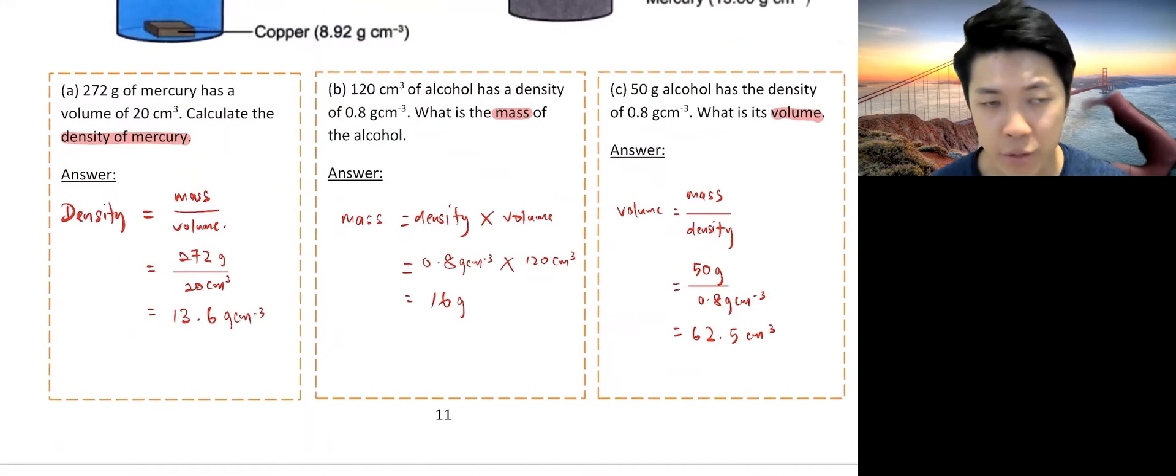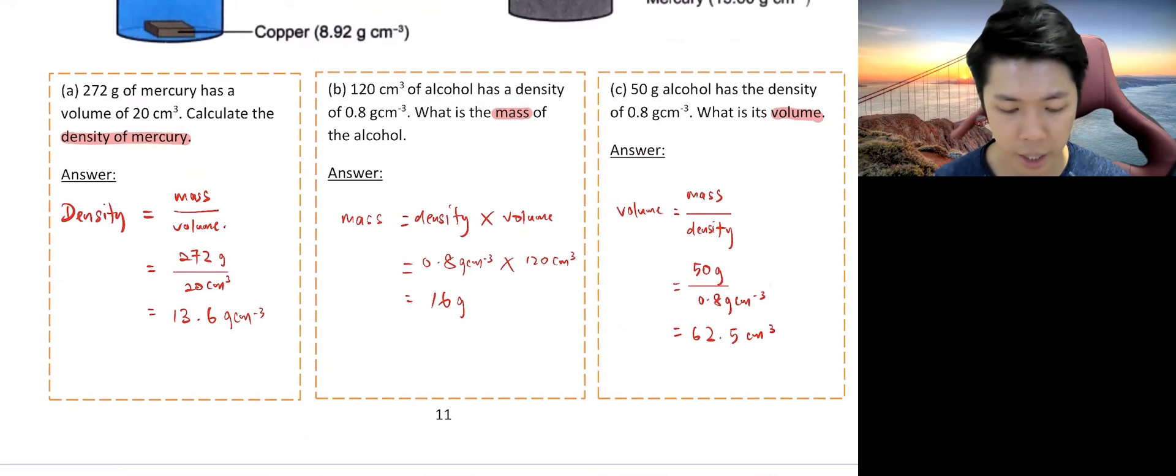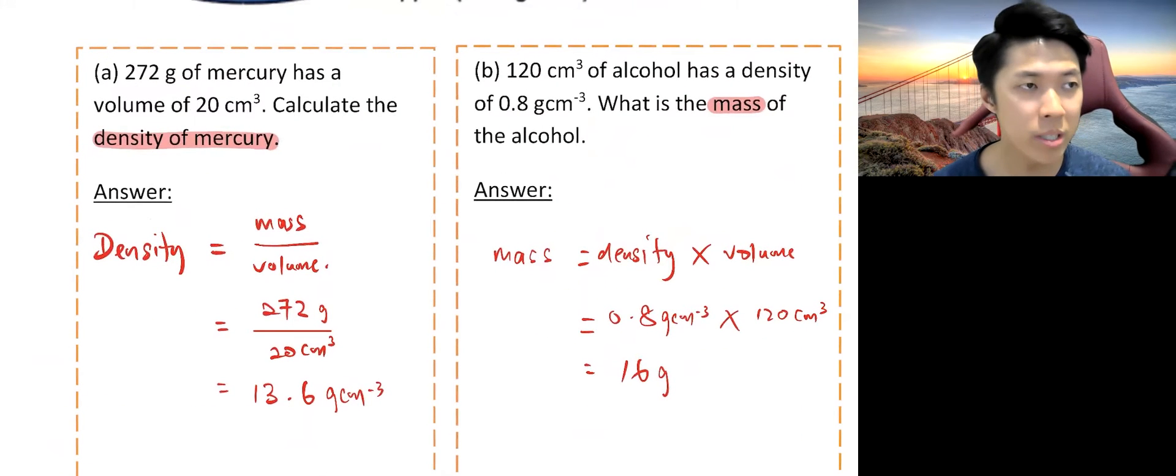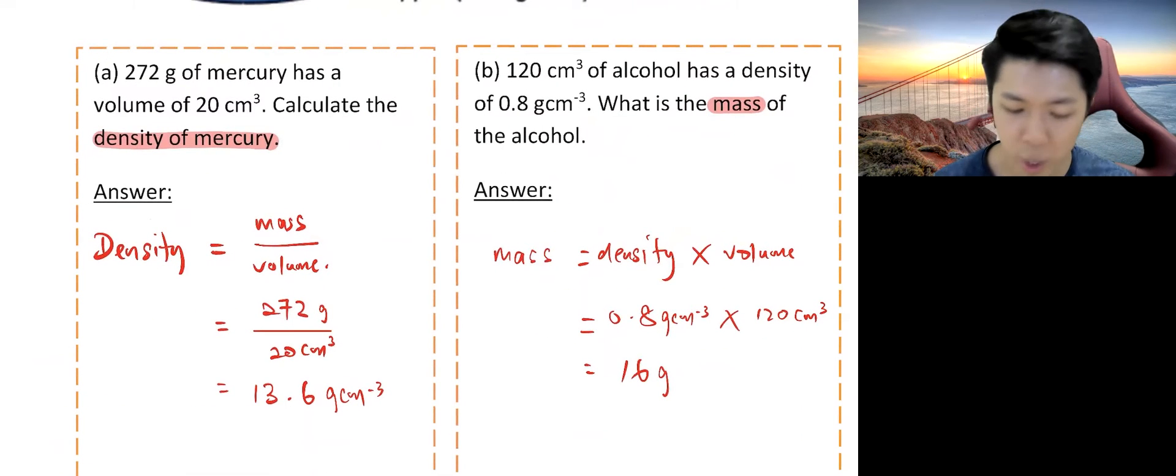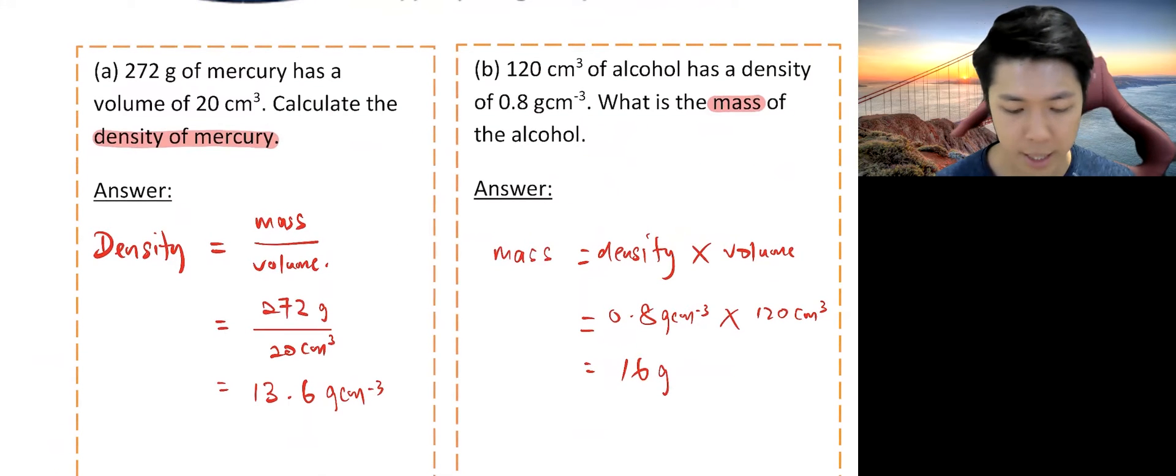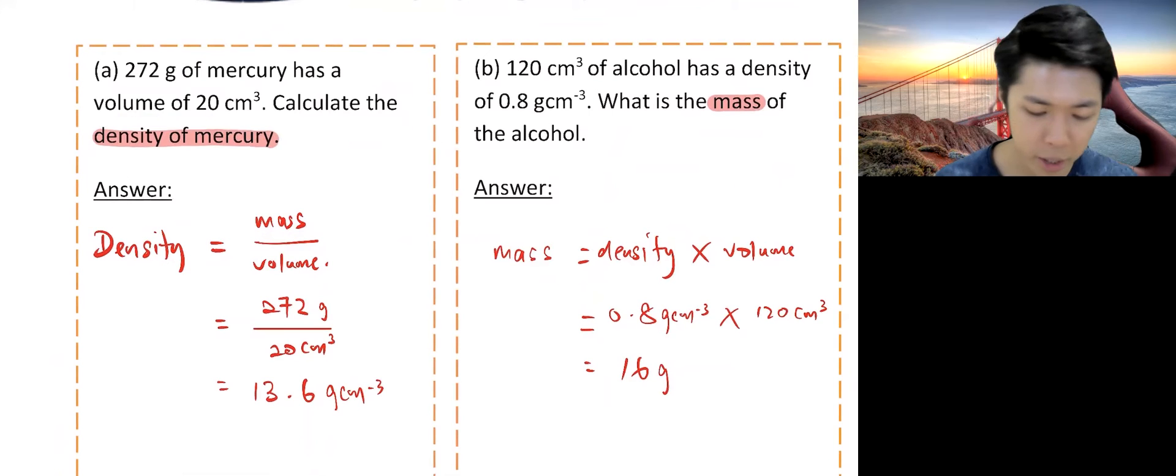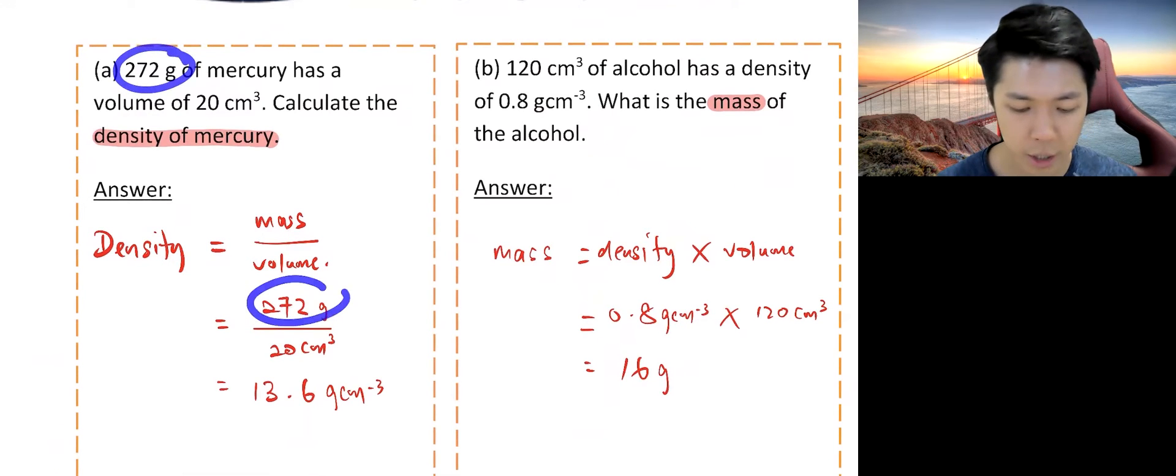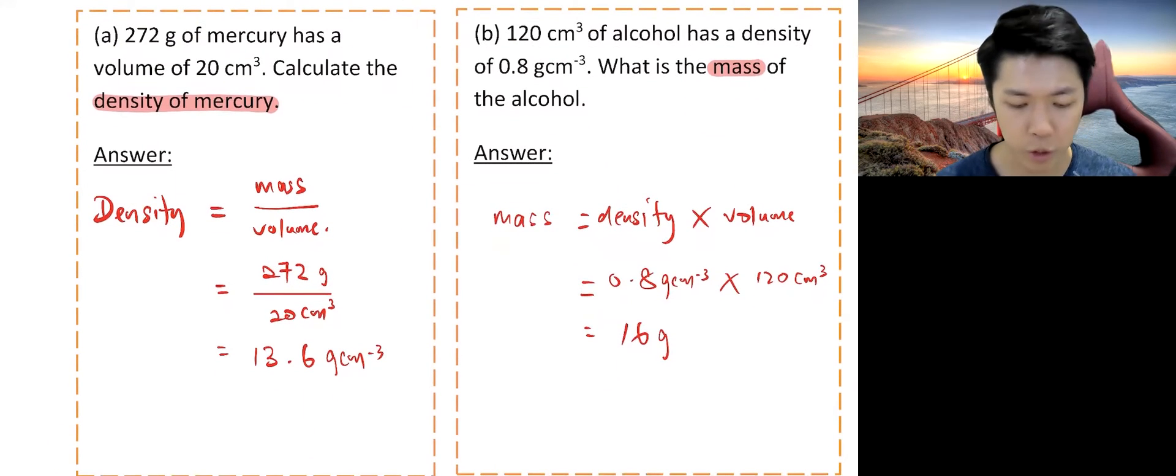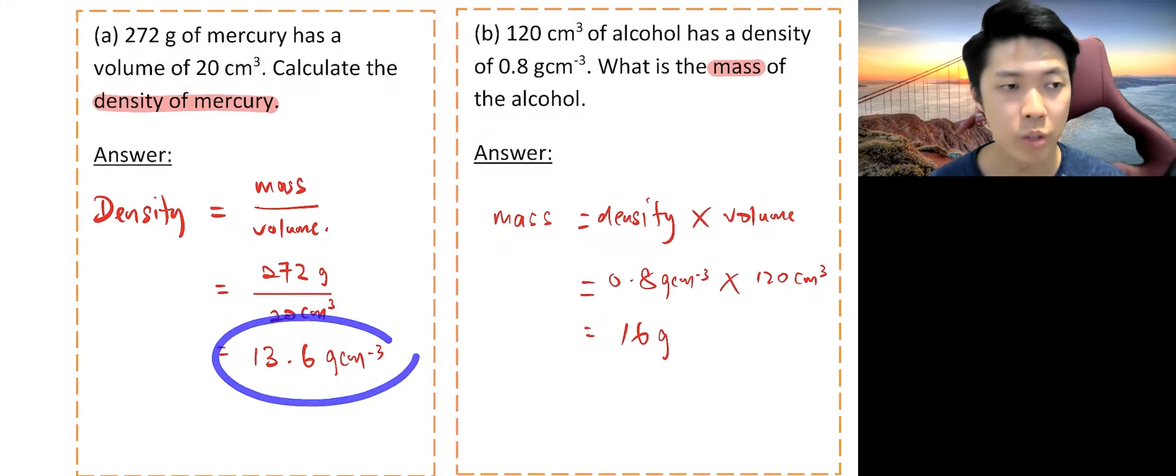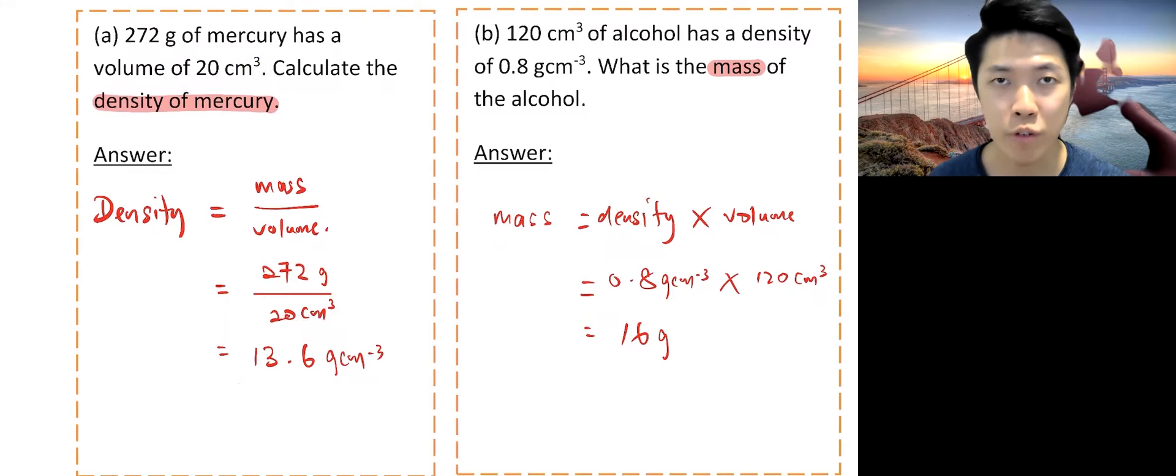Below are some of the further examples that we have. Let's take a look at some calculation, very simple calculation with calculators. 272 grams of mercury has the volume of 20 cm³. Calculate the density of the mercury. So we're looking for density. Throw in your formula. Density equals the mass over volume. So throw in the number of mass, which is 272, and throw in the number of volume, which is 20 cm³. Let your calculator do the job. And here you go. 13.6 g cm⁻³. Unit, very important.